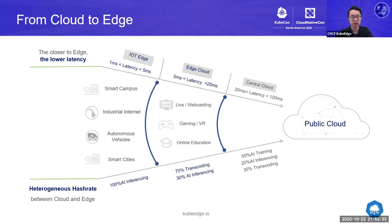The workloads between cloud and the edge are very different. In the central cloud, more than half of workloads are AI training, and also there are a few inferencing and transcoding workloads. While in the edge cloud, it becomes a bit different because the hash rates and computing power are less than the central cloud, and it's much more closer to the end user. So it typically consists more of transcoding workload and a few AI inferencing.